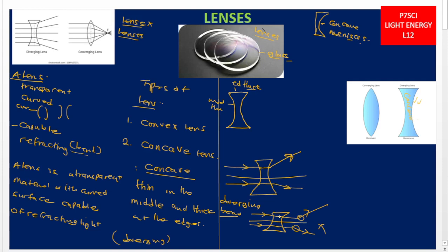These concave lenses are used in correcting short-sightedness — for people who are not capable of seeing things at a distance, the spectacles they wear contain concave lenses. We shall understand that in more detail. So the ray diagram shows light rays being refracted in different directions — that is the diverging lens, or concave lens.